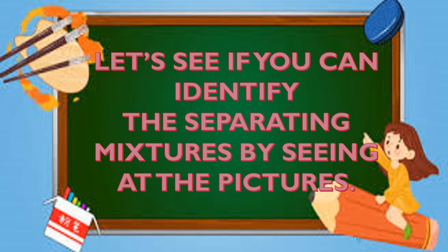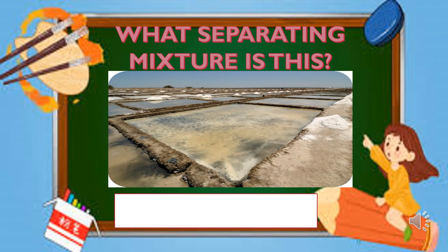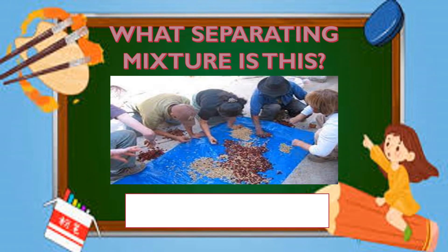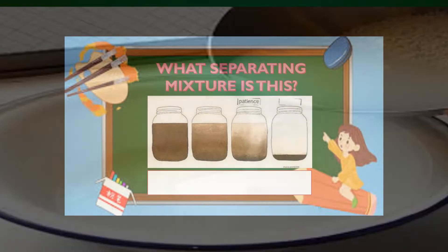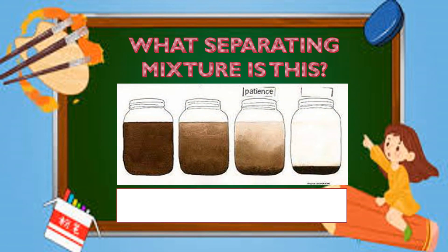Let's see if you can identify the separating mixtures by looking at the pictures. What separating mixture is shown in this picture? Very good — this is evaporation. What separating mixture is this? Good job! This is hand-picking. What separating mixture is this? Great! This is decantation. What separating mixture is this? Awesome! This is sedimentation.